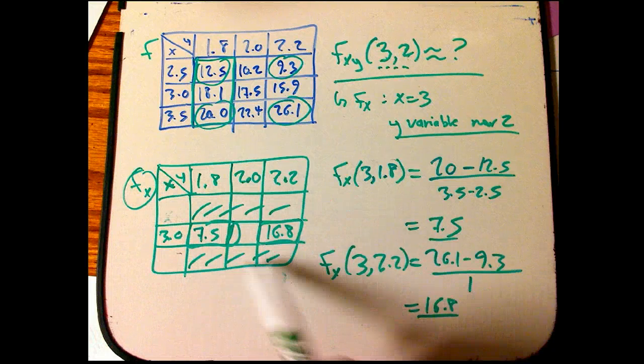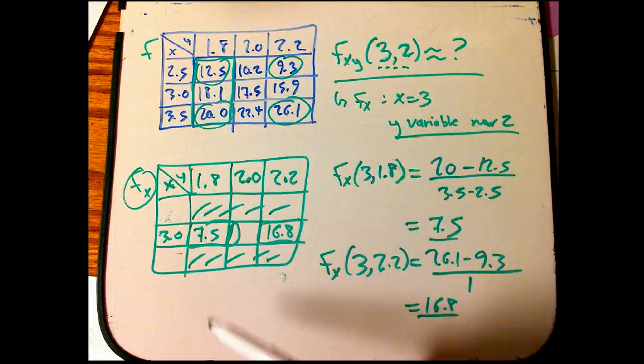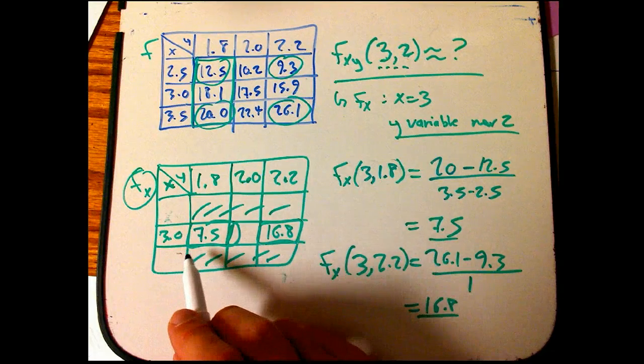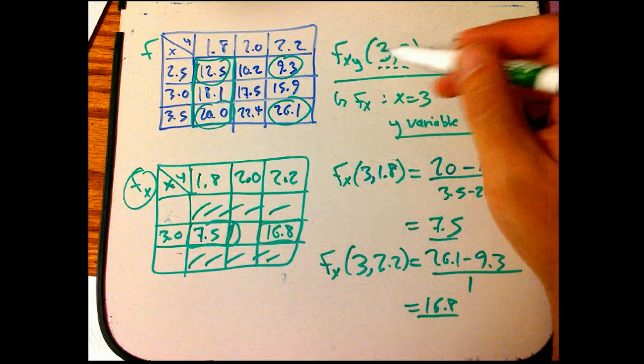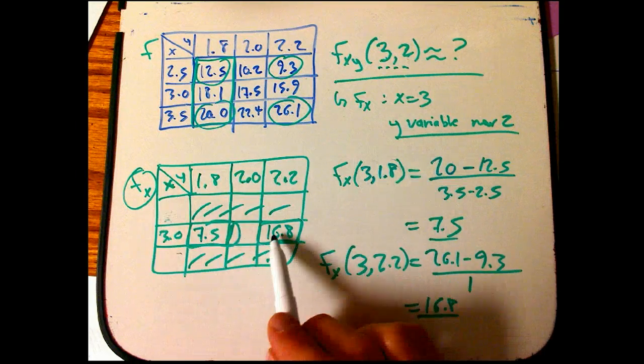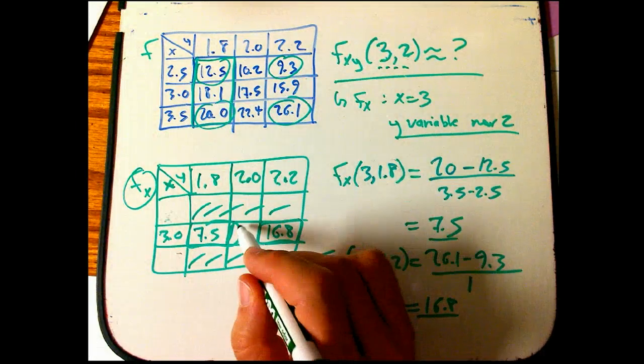I could, in principle, calculate all these guys to whatever degree of accuracy. But in order to get fxy at (3,2), now I'm going to take the y derivative of this function, and I'd like to get it right here.